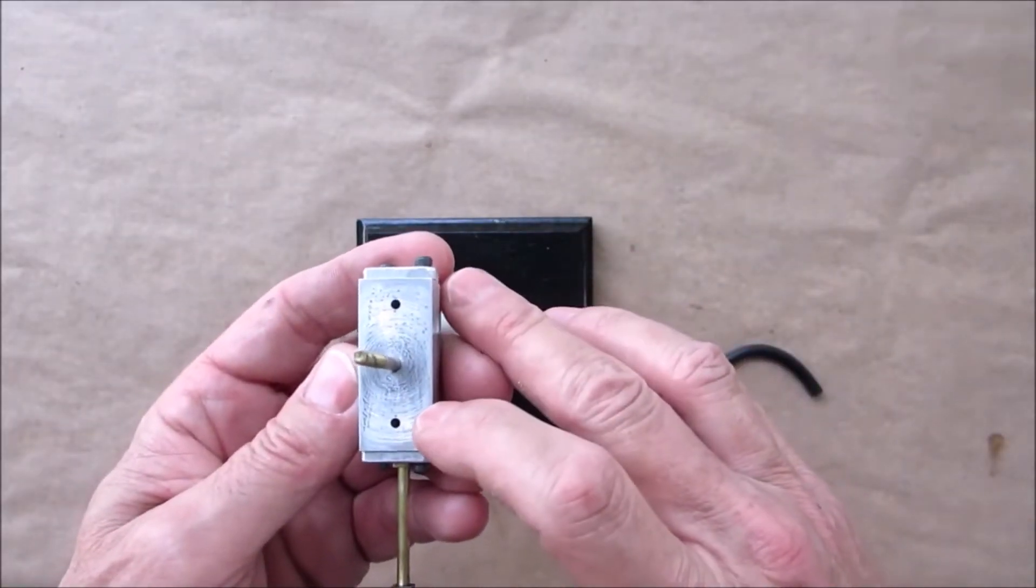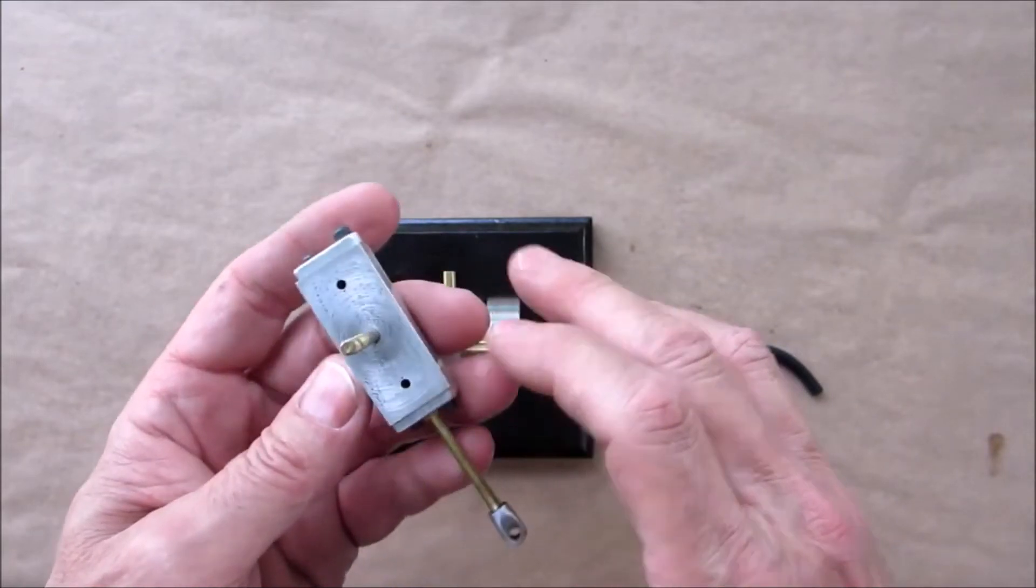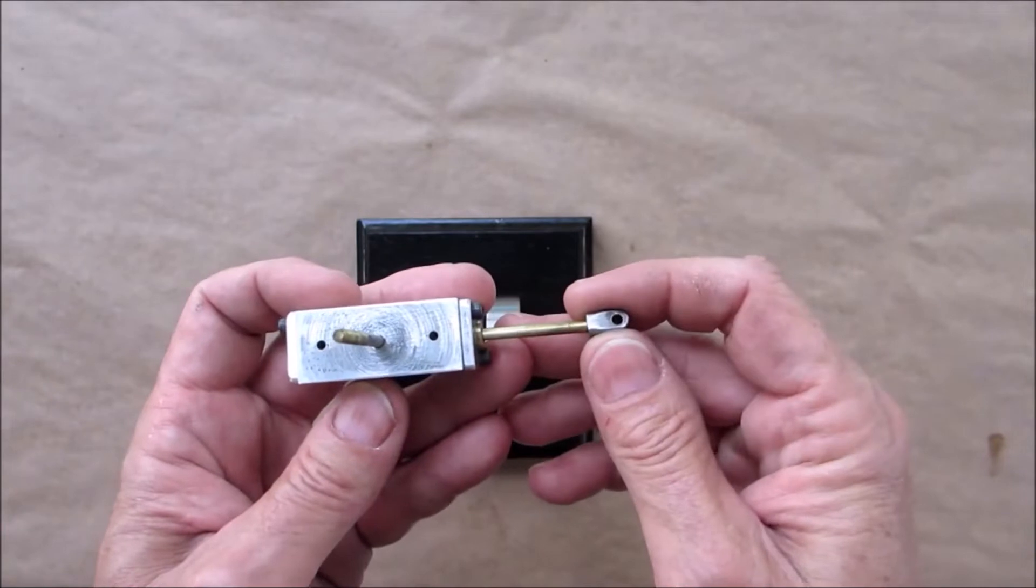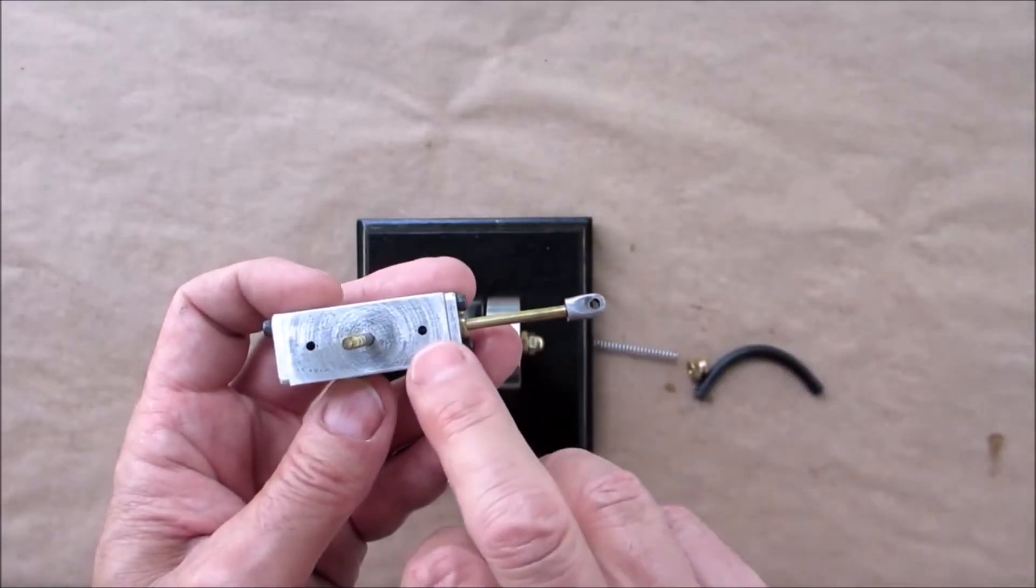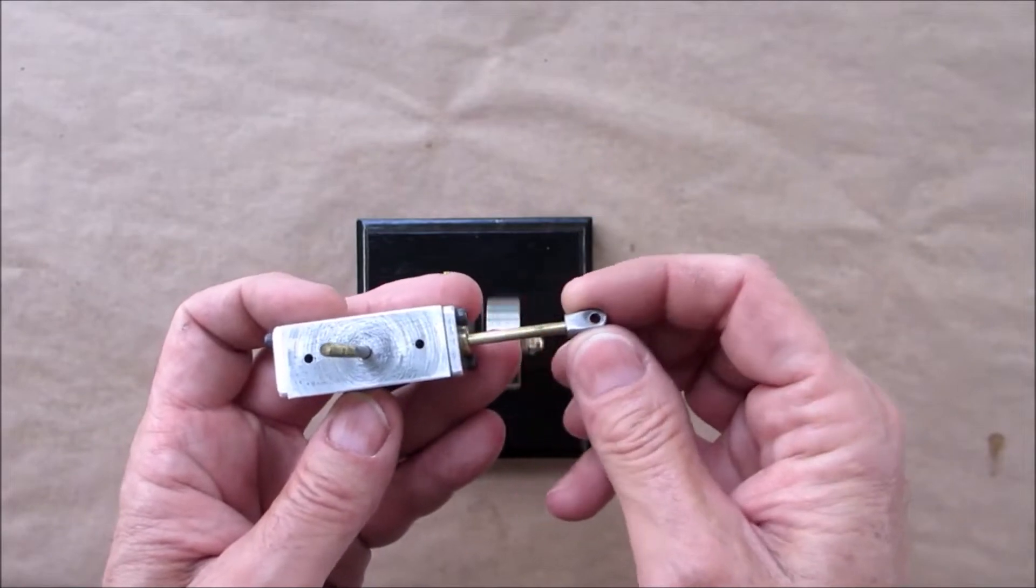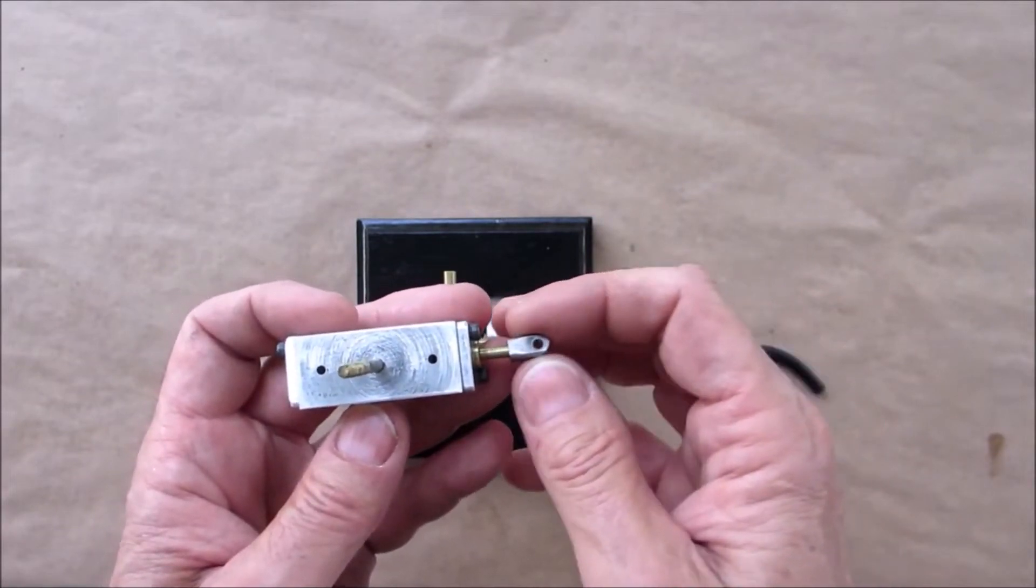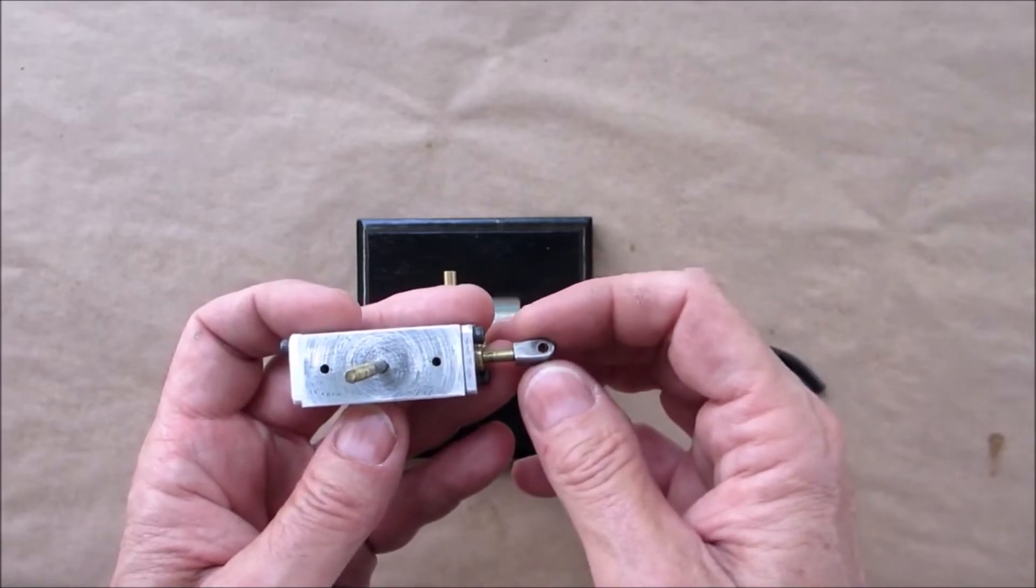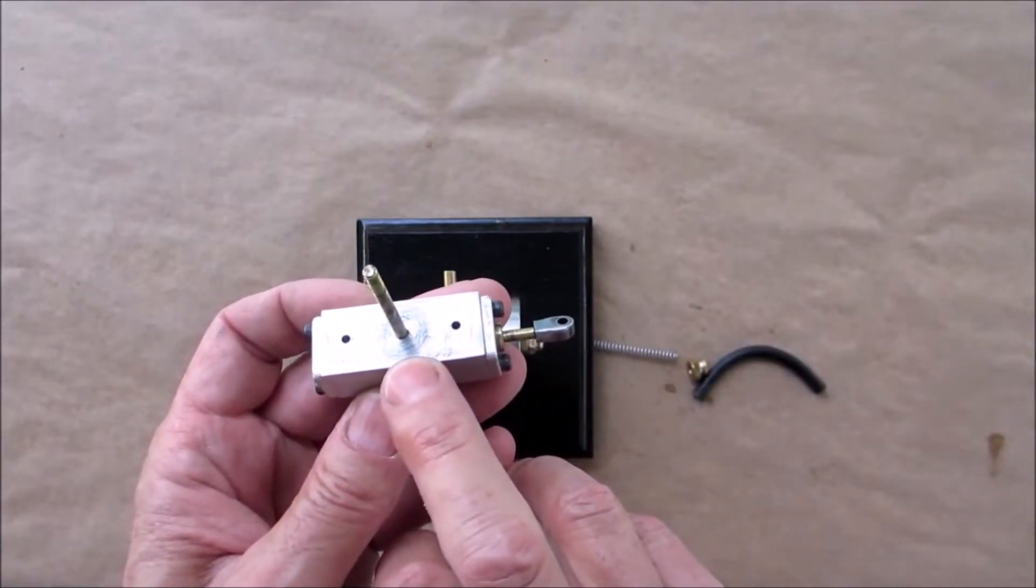So that is actually two holes in a double acting and what happens is the steam will come in, push the piston down, and then the steam goes into that hole and pushes the piston back up. So you get a nice smooth action and you can get this to go very, very slow.